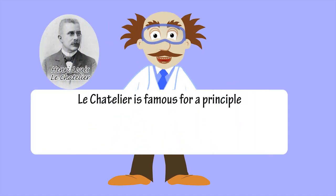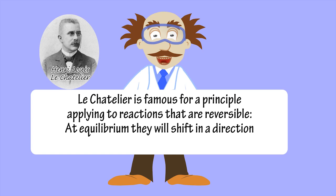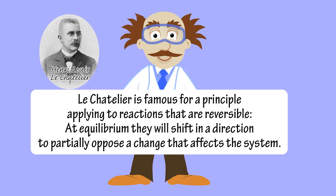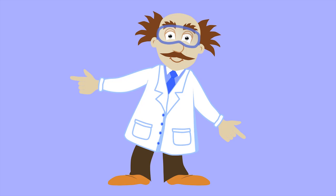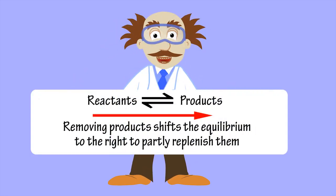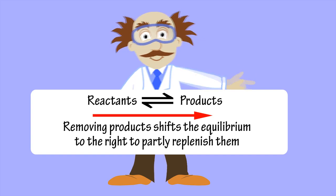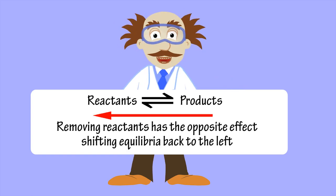Le Chatelier is famous for a principle applying to reactions that are reversible. At equilibrium they will shift in a direction to partially oppose a change that affects the system. Removing product shifts the equilibrium to the right to partly replenish them. Removing reactants has the opposite effect.